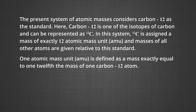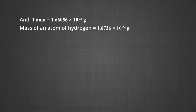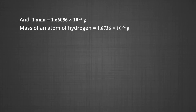One atomic mass unit (AMU) is defined as a mass exactly equal to 1/12th the mass of one carbon-12 atom. 1 AMU is equal to 1.66056 × 10⁻²⁴ grams.